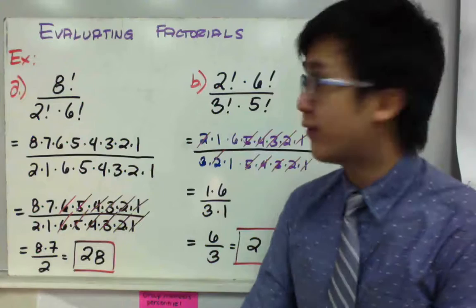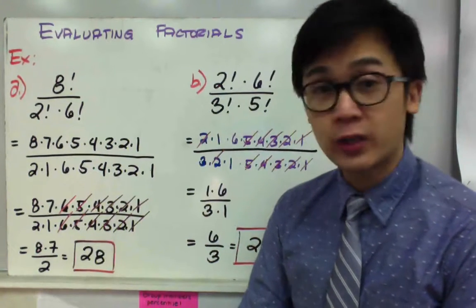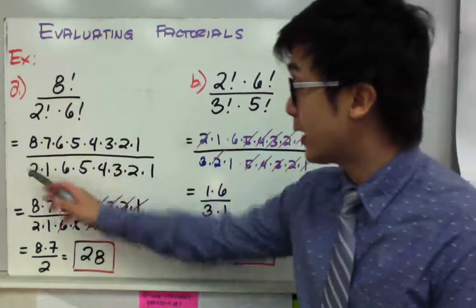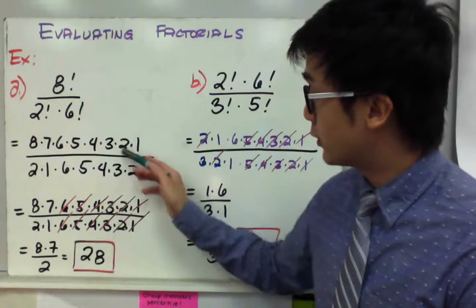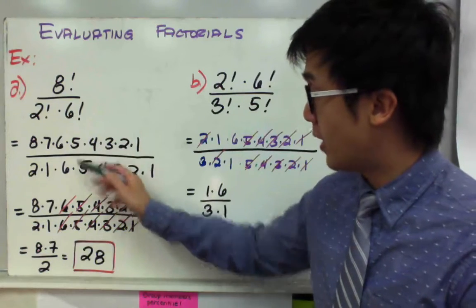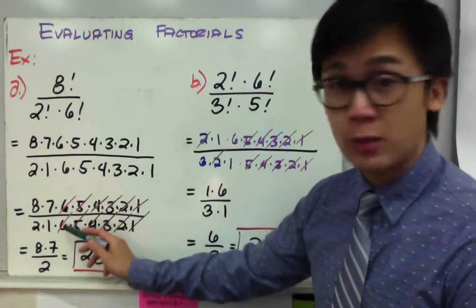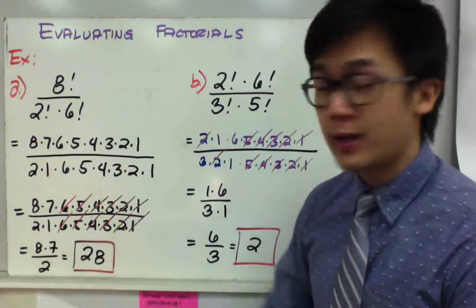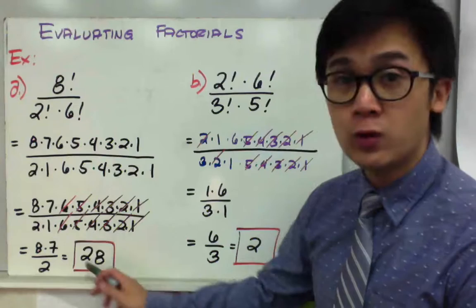There are two ways to evaluate factorial: one, you can use your calculator; and two, you can cancel terms that are alike. For this example, I'm not going to use the calculator — I'm going to cancel 1 and 1, 2 and 2, 3 and 3, 4 and 4, 5 and 5, 6 and 6. You're basically canceling all these numbers because they all turn into 1. You're left with 8 times 7 all over 2 times 1, and 8 times 7 over 2 is equal to 28.